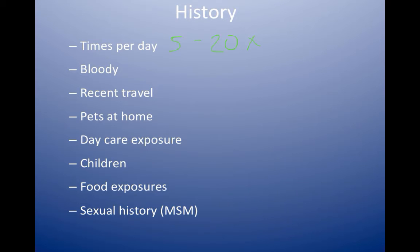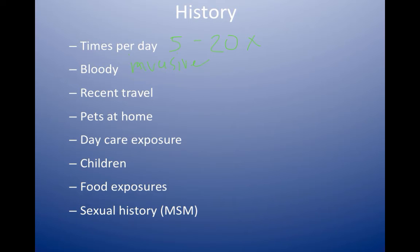When we get up into the 20 times per day region, we start to think about things like C. diff, which patients say they just can't get off the toilet. Bloody diarrhea should also make you think of some kind of bacteria that would invade the wall of the colon or the mucosa, and there are certain pathogens that are more likely to do that.